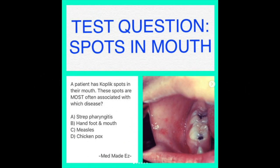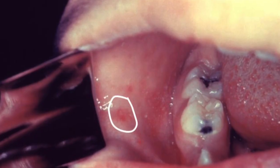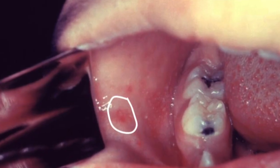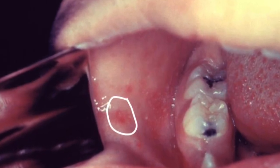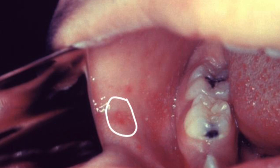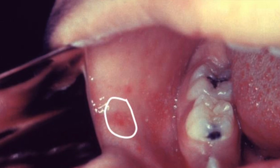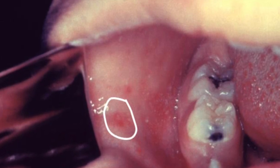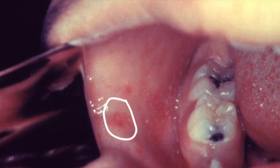Let's talk about the signs and symptoms of measles. The spots mentioned in the question — Koplik spots — are an early sign of measles. These are small white spots in the buccal mucosa, the inner lining of the cheek.